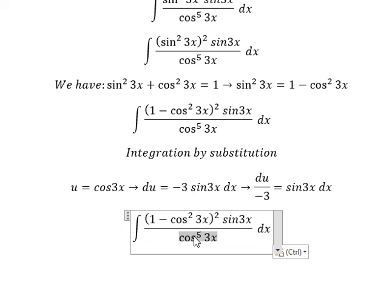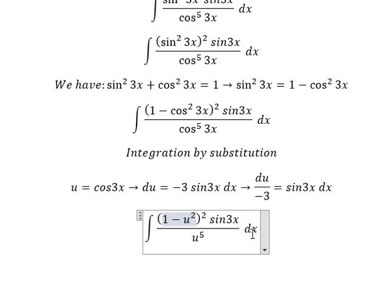This one we change to u, and we have u^5. This one we change to u^2. Sin(3x)dx we change to du over negative 3.